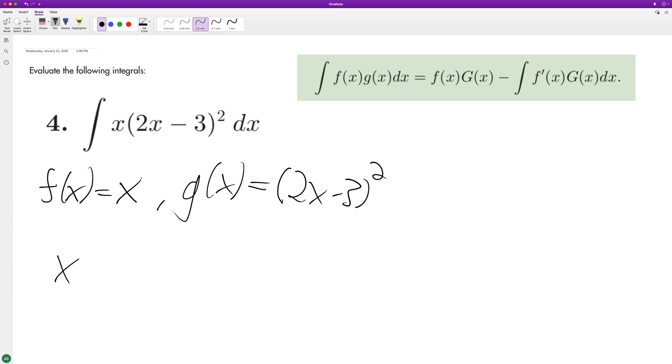So starting off we'll have x times the integral of g of x, which is going to be 1 half because the derivative of the inside is just 2, and then we'll have 1 third 2x minus 3 cubed, minus the integral of f prime of x which is just 1.